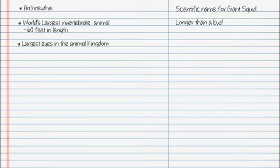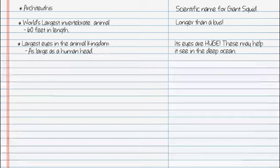Largest eyes in the animal kingdom, as large as a human head, goes on the left side. On the right, its eyes are huge. These may help it in the deep ocean.